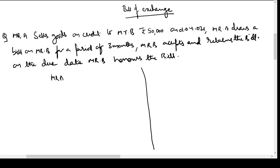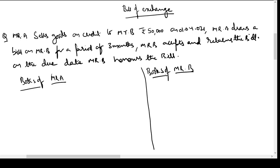We will see the accounting in the books of both parties. I will use one portion for recording entries in the books of Mr A and another for the books of Mr B. The entries we are going to pass relate to the concept of bill of exchange. Mr A is selling goods on credit to Mr B, value 50,000, on 1st April 2021.